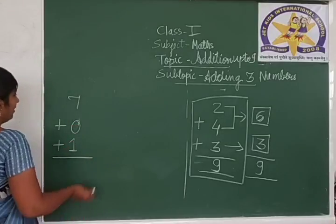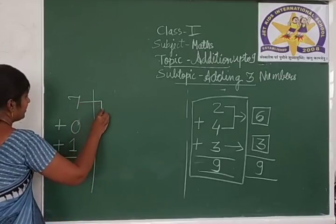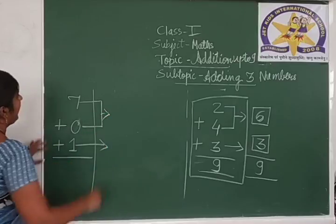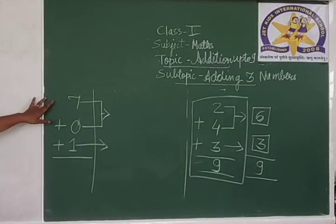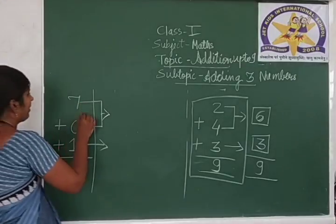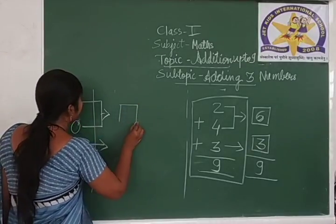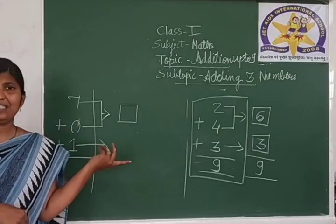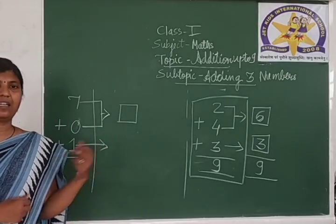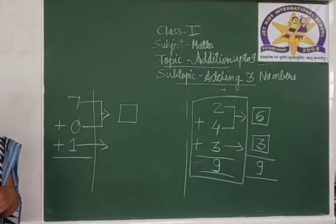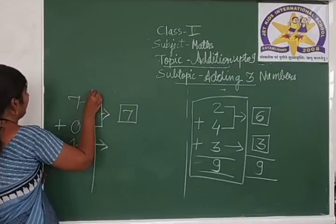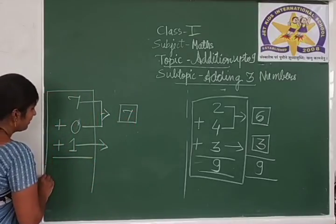Same procedure, same method we are going to follow. Add the first 2 numbers first: 7 plus 0. What will be the answer? When we add 0, 0 means nothing. When we add 0 to any number, the answer is the number itself. So 7 plus 0 equals 7.